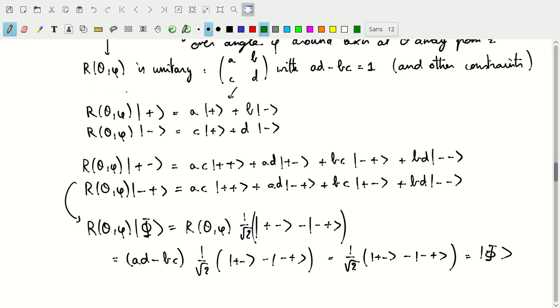Now, let's look back at what we said earlier here. This rotation matrix, this transformation matrix is unitary, and it has determinant equal to one. So ad - bc has to be equal to one.